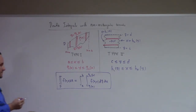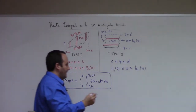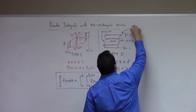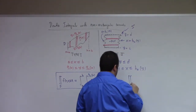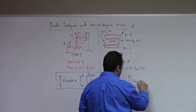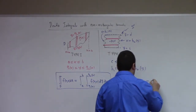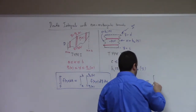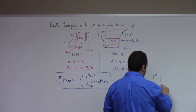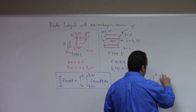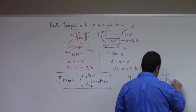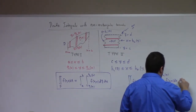Now type 2: if this region is called s, then the double integral over s of f(x,y) dA, where f is continuous over s, is equal to the integral from c to d, integral from h1(y) to h2(y), f(x,y) dx dy.